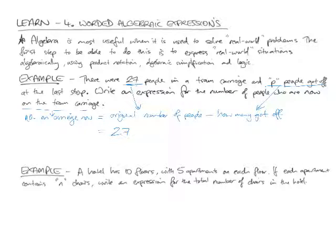So the original number is 29 minus how many got off, which is P. So the expression for the number of people now on the carriage is 29 minus P.